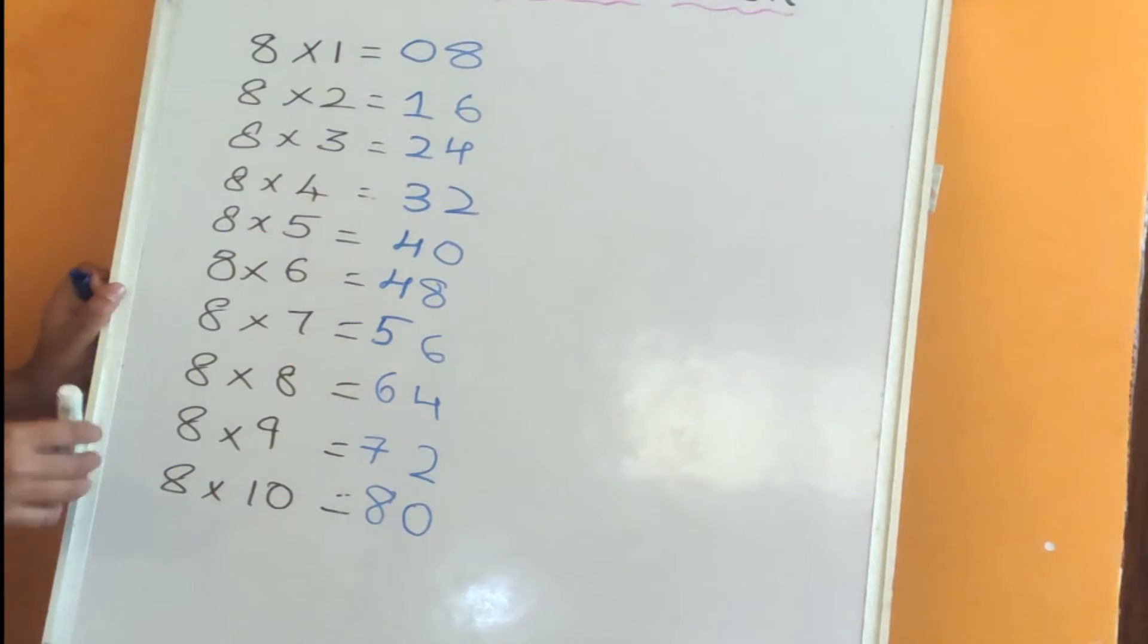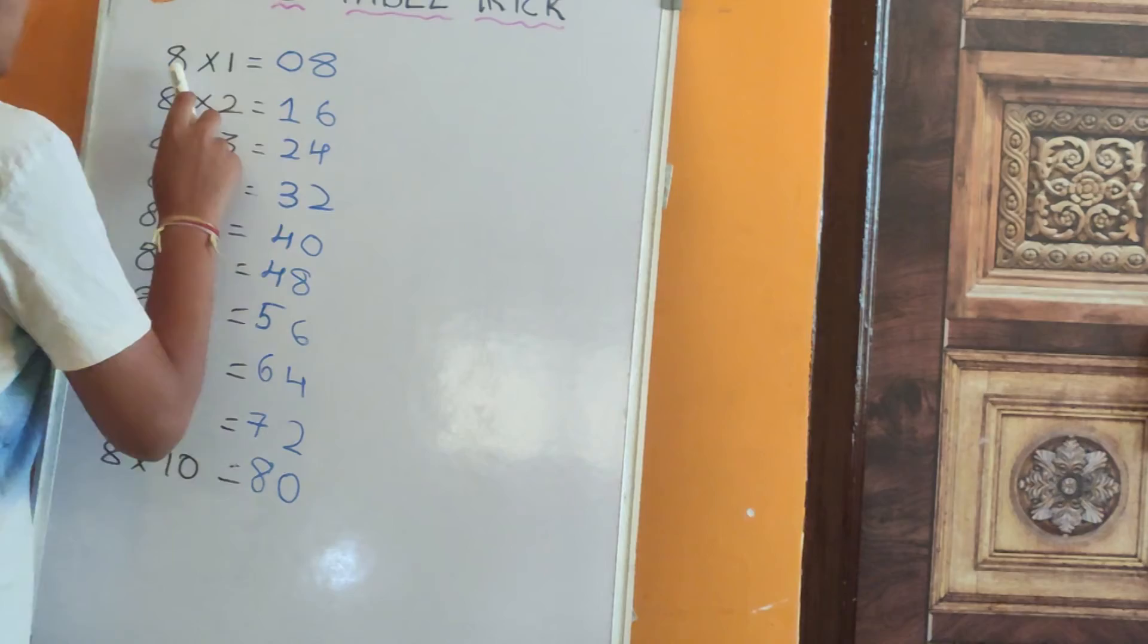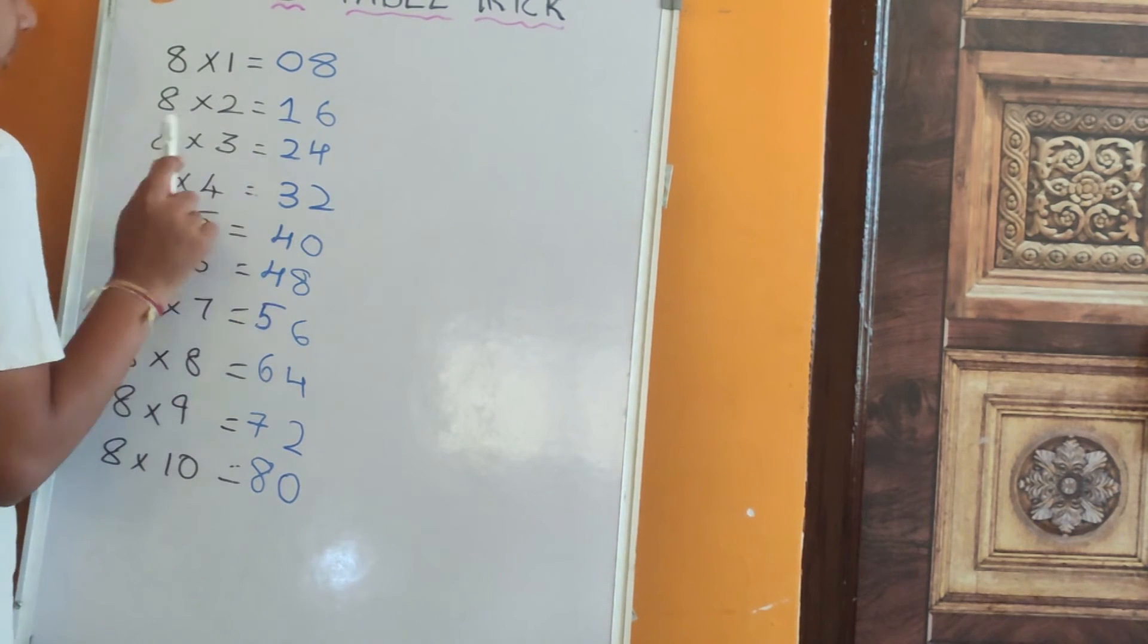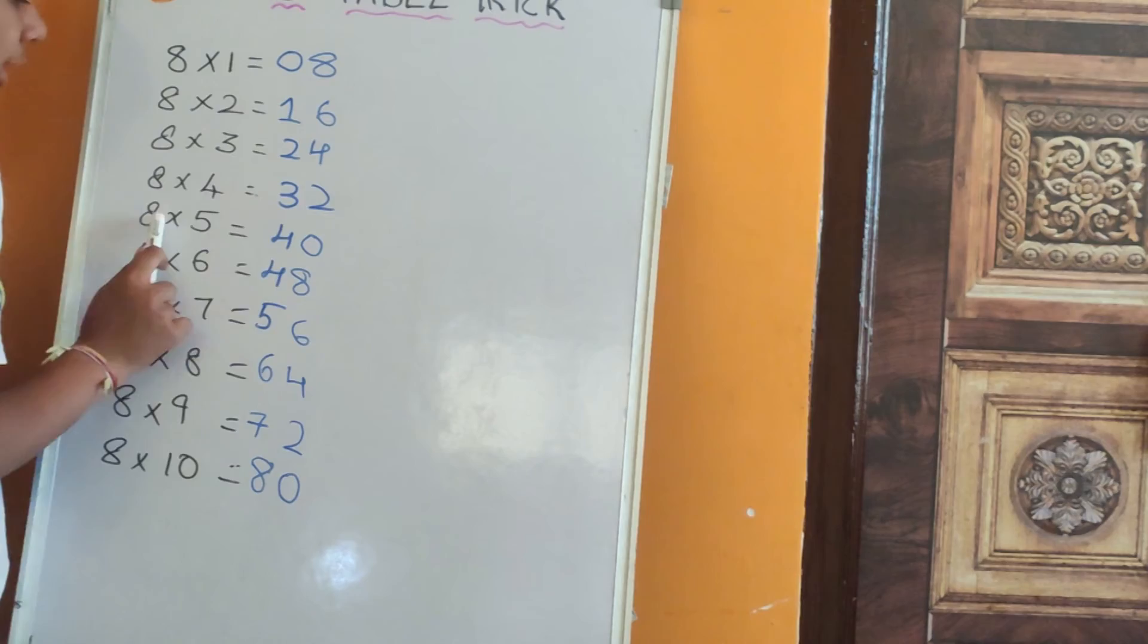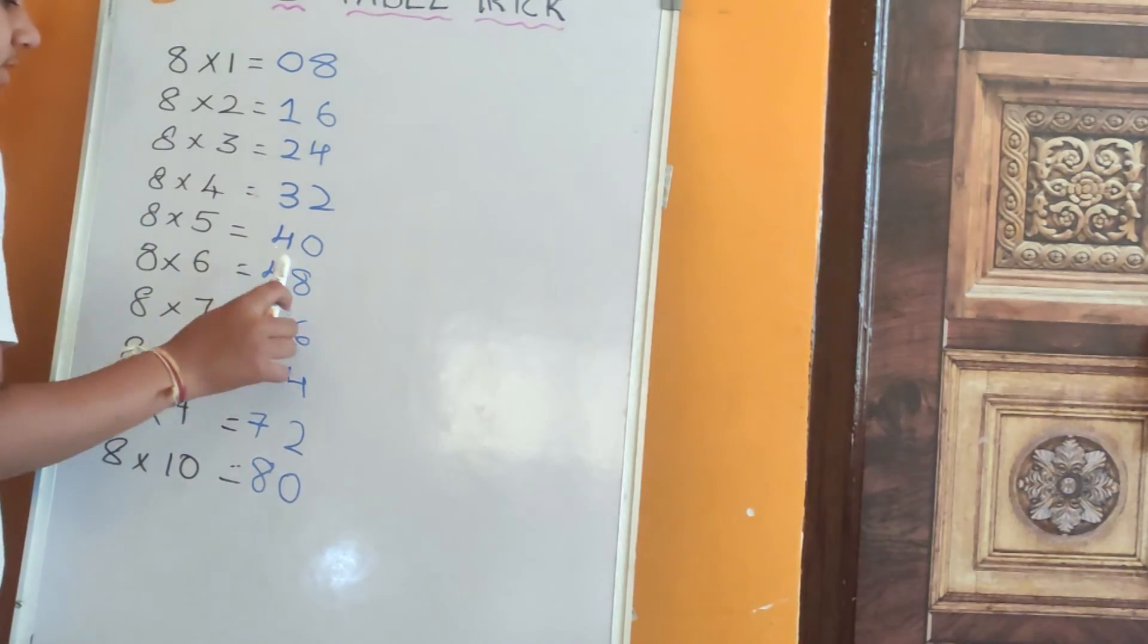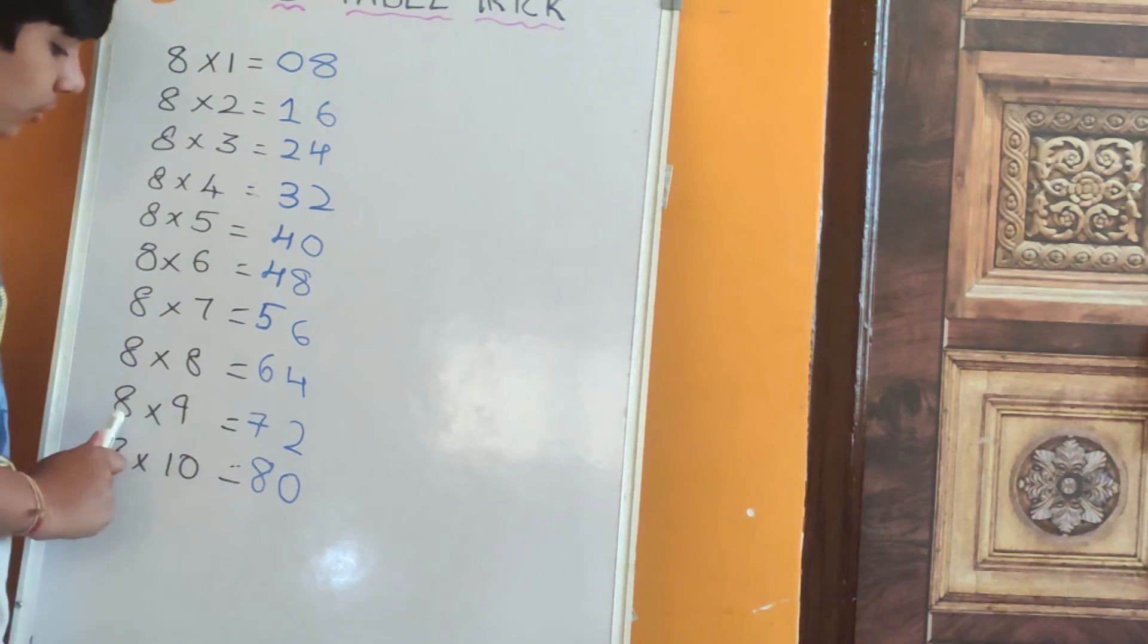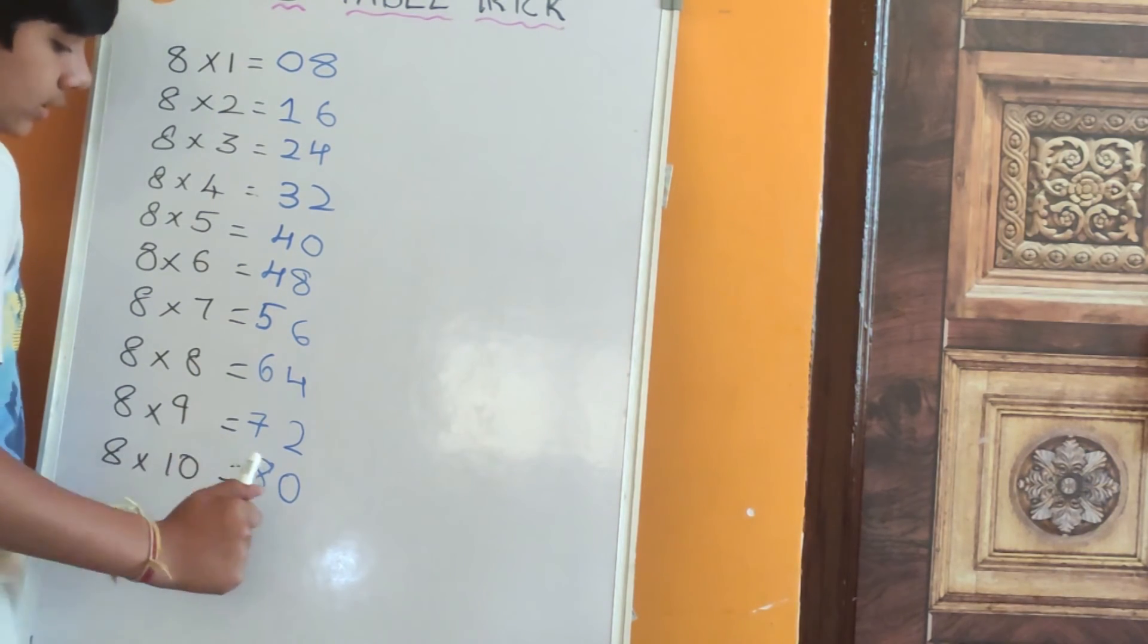Let's check: 8 x 1 = 08, 8 x 2 = 16, 8 x 3 = 24, 8 x 4 = 32, 8 x 5 = 40, 8 x 6 = 48, 8 x 7 = 56, 8 x 8 = 64, 8 x 9 = 72, 8 x 10 = 80.